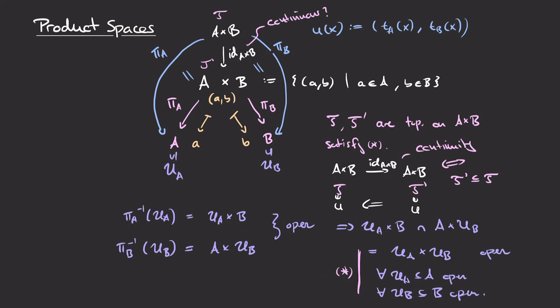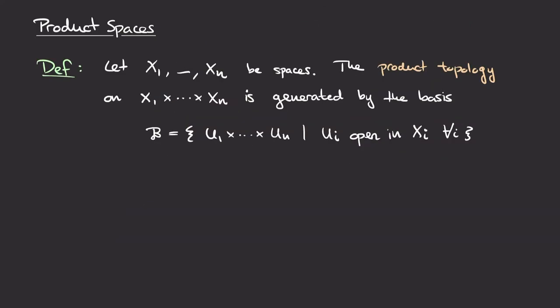In other words, the product of two topological spaces is the space whose underlying set is the Cartesian product of the underlying sets, and whose topology is generated by sets of the form U_A × U_B where U_A is open in A and U_B is open in B. More generally, the product topology on X_1 × ··· × X_n is the topology generated by the basis ℬ consisting of sets U_1 × ··· × U_n where each U_i is open in the corresponding space X_i.